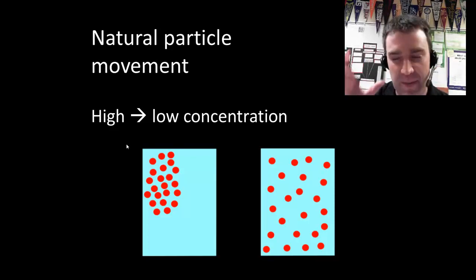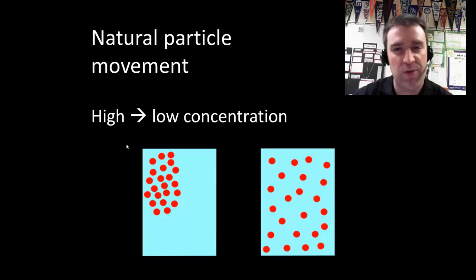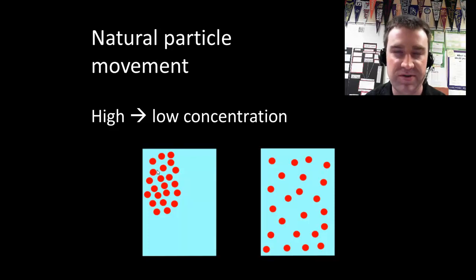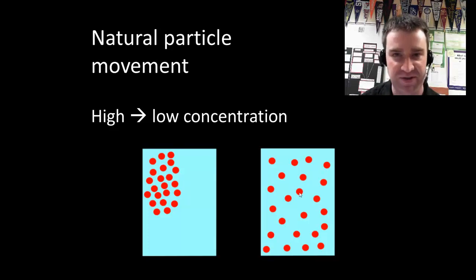You can also think about dropping a small amount of food coloring into a beaker of water — it will gradually spread out and eventually appear equally colorful throughout the beaker. That occurs because those particles in that dye are highly concentrated at first, and particles actually individually move randomly. But despite the fact that we can't predict what any individual particle would do, we can predict what the overall population will do, and they will tend to spread out, going from high to low concentration.